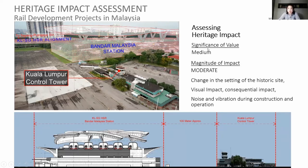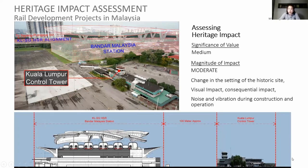When we assessed the significance, it was medium because it was not yet listed by the Department of National Heritage — it was in the process of listing. The magnitude of impact is moderate. We can see the change to the setting of the historic site. We will have visual impact, consequential impact, and noise and vibration impact during both construction and operation. This control tower — compared to the scale of the future development — will just sink. It will be brushed under the carpet; you won't even be able to see it given the scale of the project.